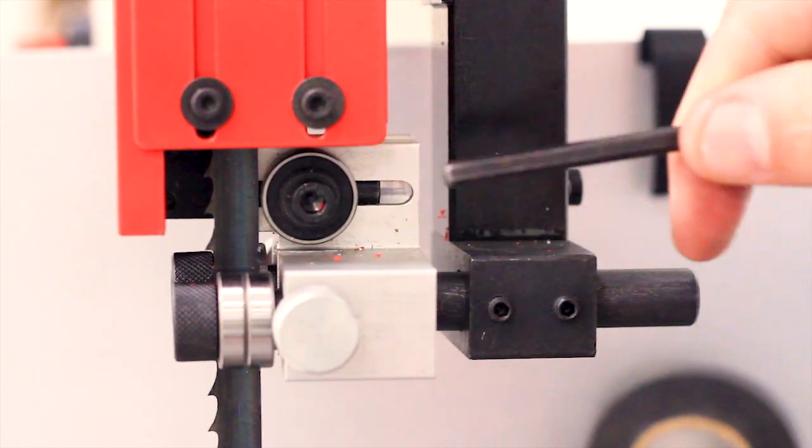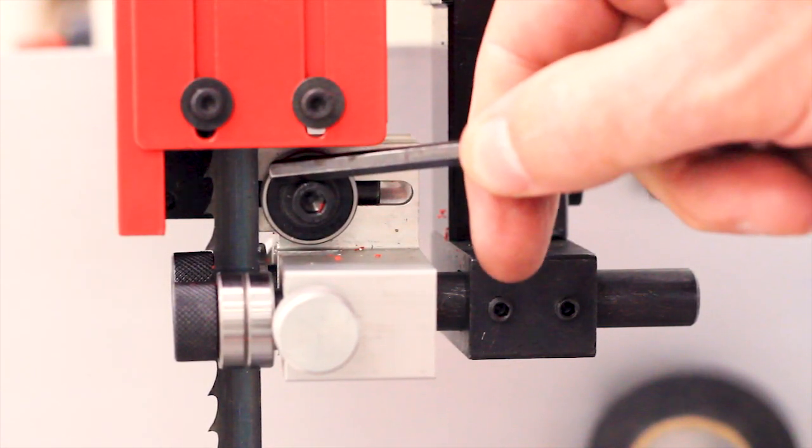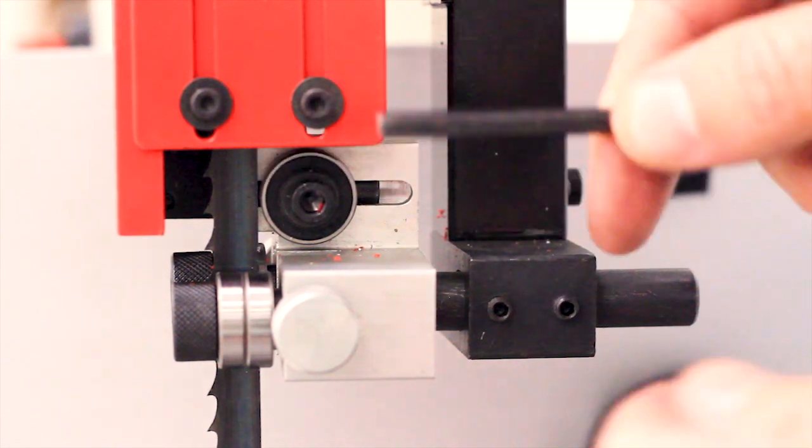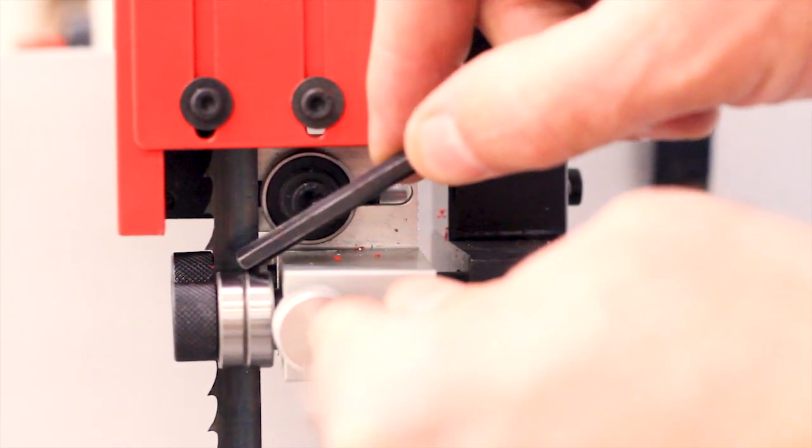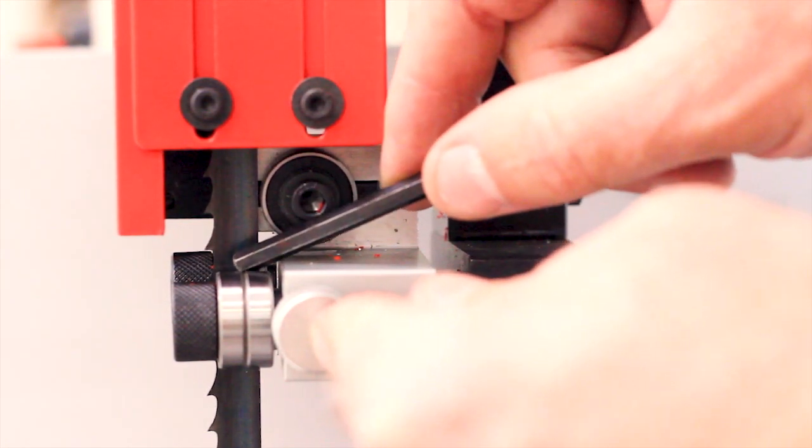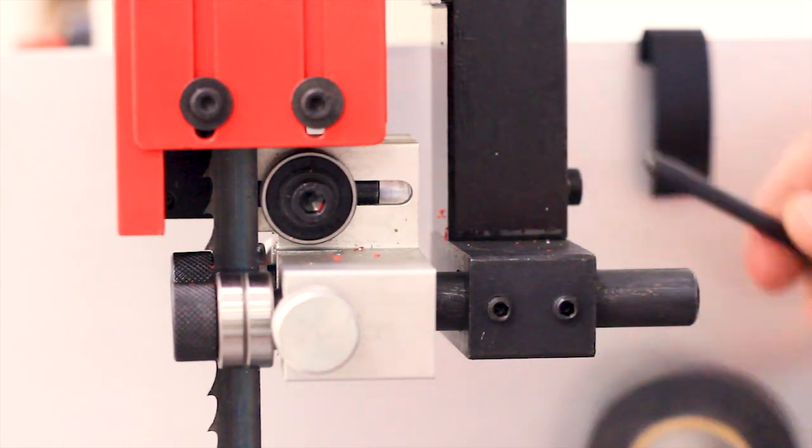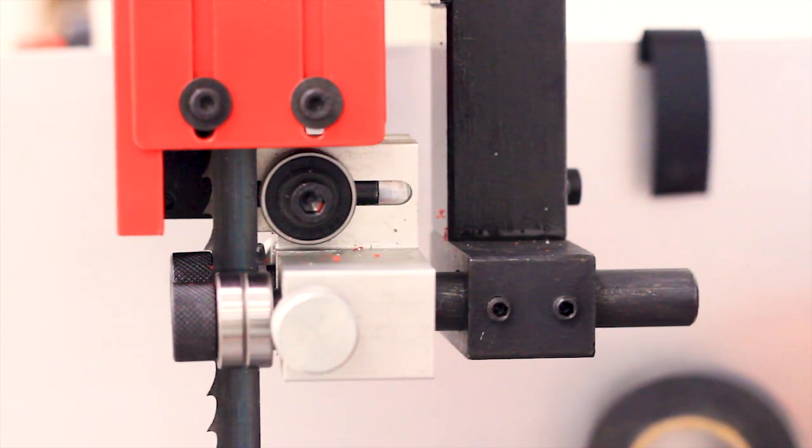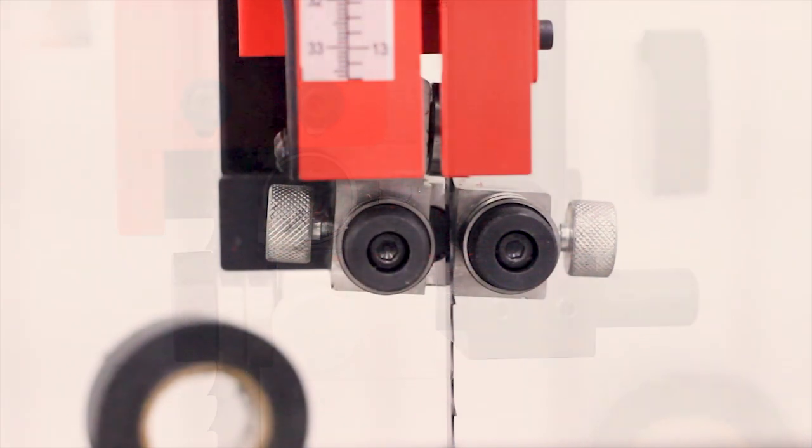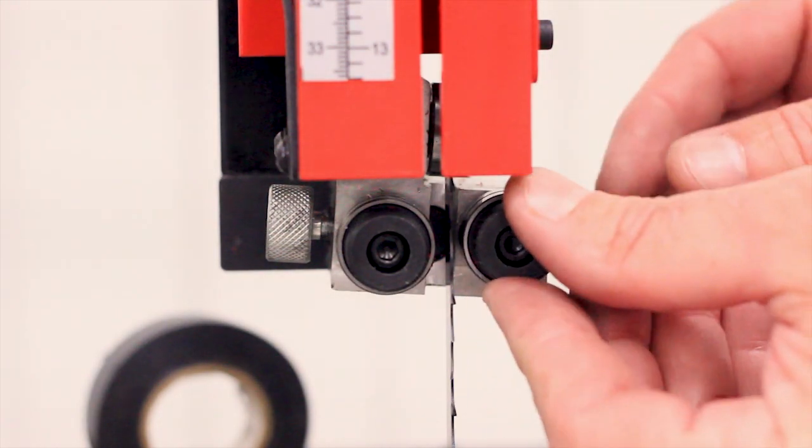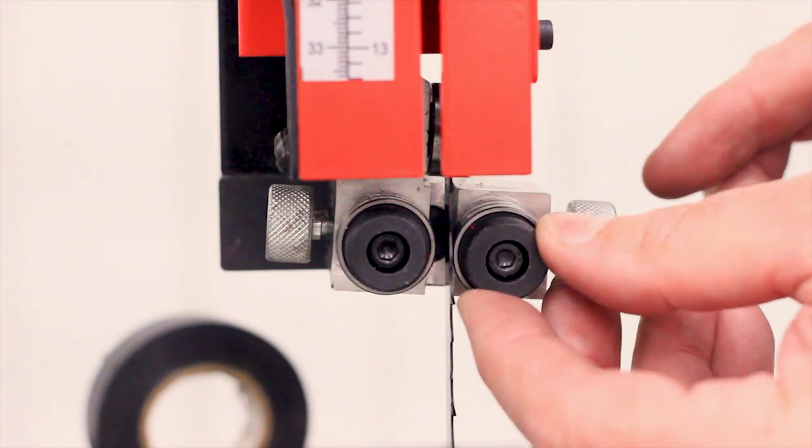So now we have the rear thrust bearing adjusted properly and the side bearings adjusted. We need to go adjust the side bearings against the body of the blade from the front.